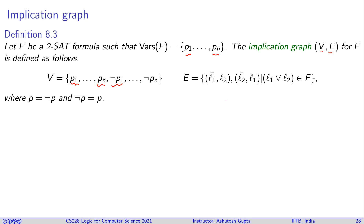There are edges between these literals. If you have a clause L1 or L2, that means if ¬L1 is true (i.e., L1 is false) then L2 must be made true. Similarly, if ¬L2 is true then L1 must be made true. So every clause in F introduces two edges.